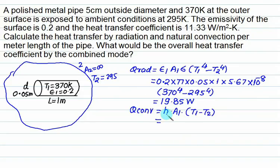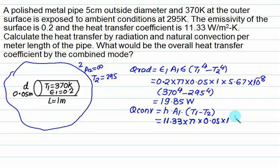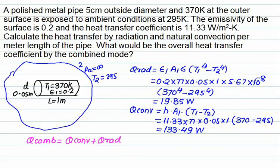Convection heat transfer is given by h multiplied by the surface area of the cylinder multiplied by (T1 minus T2). Here h is 11.33, surface area is pi·D·L = pi × 0.05 × 1, T1 is 370 K and T2 is 295 K. This gives convection heat transfer of 133.49 W.